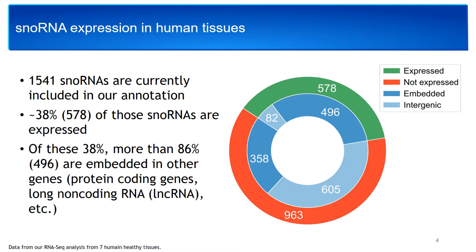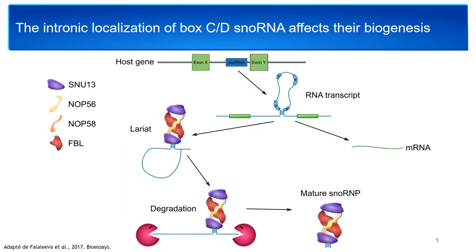The fact that snoRNAs are embedded in other genes affects their biogenesis. Here is a brief overview of the maturation of box C/D snoRNP. A host gene will be transcribed into an RNA transcript that will be spliced to give a mature mRNA and some lariats — in this case, a lariat containing a snoRNA sequence. This sequence will be bound by snoRNP core proteins such as SNU13, NOP56, NOP58, and fibrillarin. This lariat will be further processed by debranching and by the degradation of the 5' and 3' ends, leading eventually to a mature snoRNP.